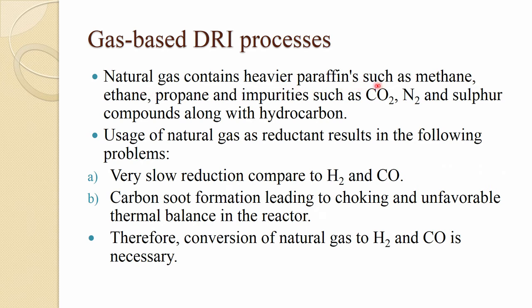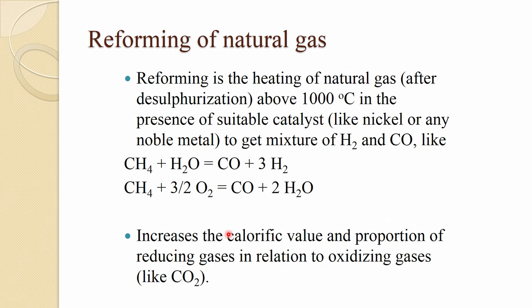Natural gas contains heavier paraffins such as methane, ethane, and propane, and impurities like carbon dioxide, nitrogen, and sulfur compounds. Using natural gas directly results in very slow reduction compared to hydrogen or CO, carbon soot formation due to heavy paraffins leading to choking, and unfavorable thermal balance. Therefore, conversion of natural gas to hydrogen and CO is necessary, requiring a reformer.